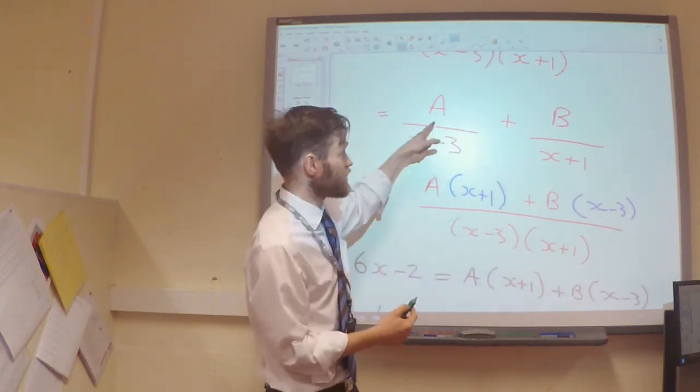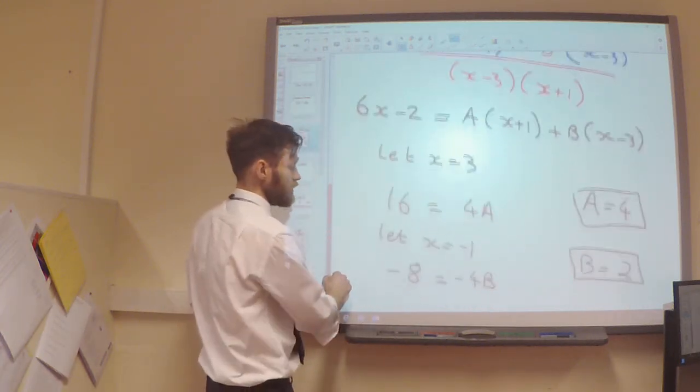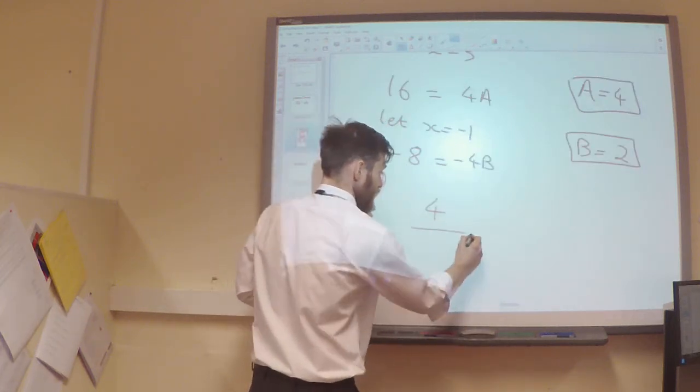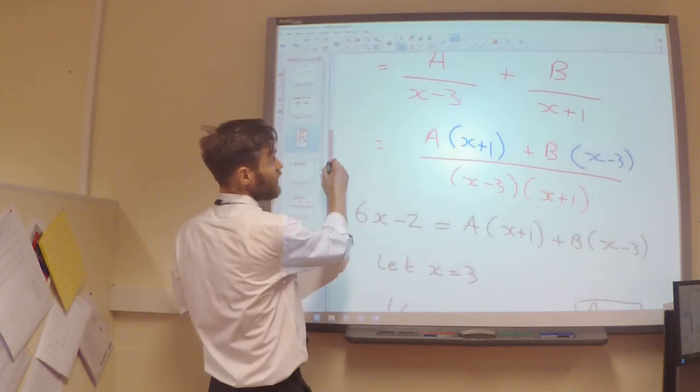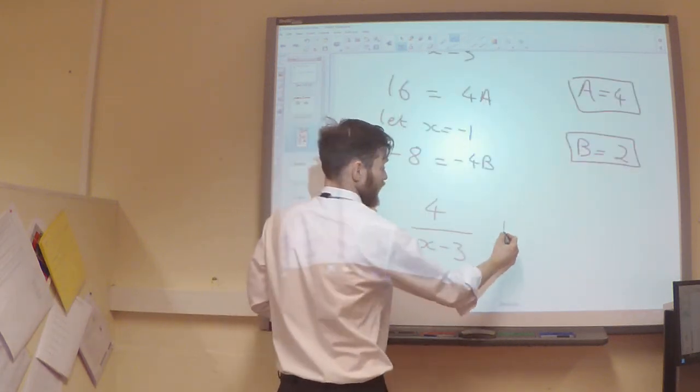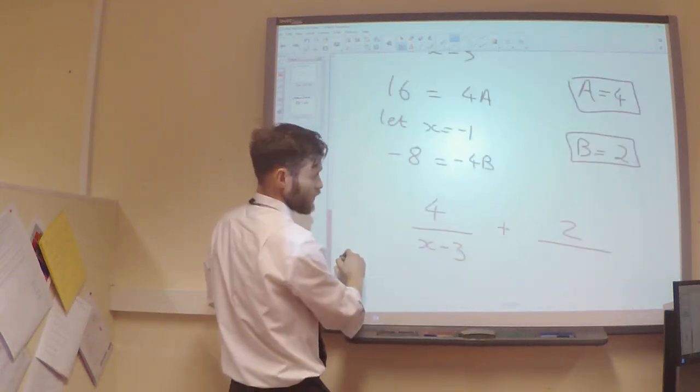And I can substitute my values of A and B into this. So, I can now say that my partial fractions is going to be A, which is 4, over x minus 3, plus B, which is 2, divided by the x plus 1.